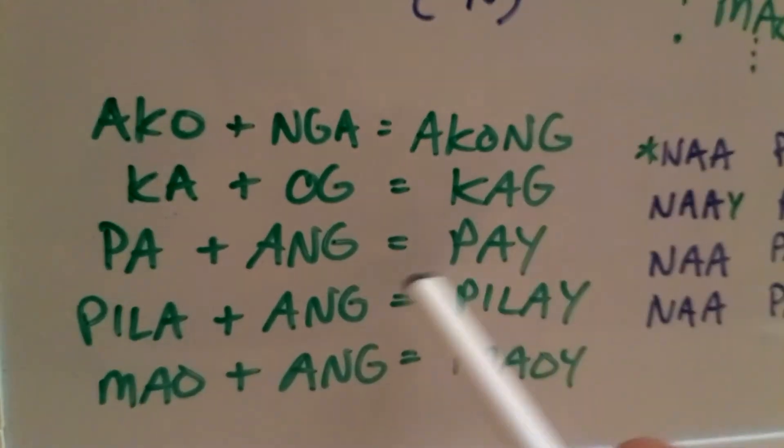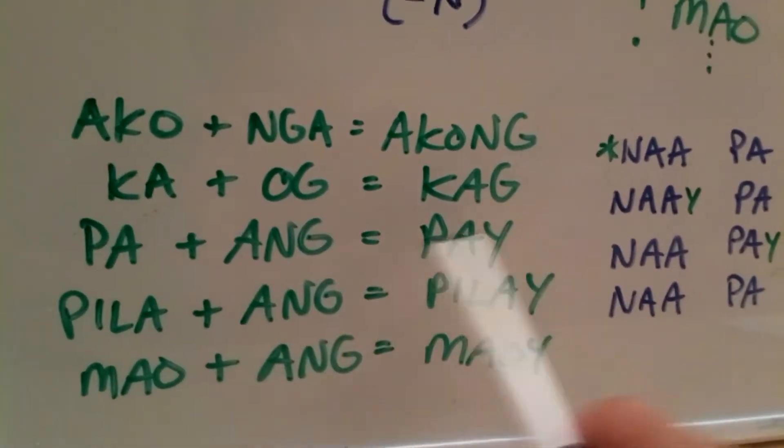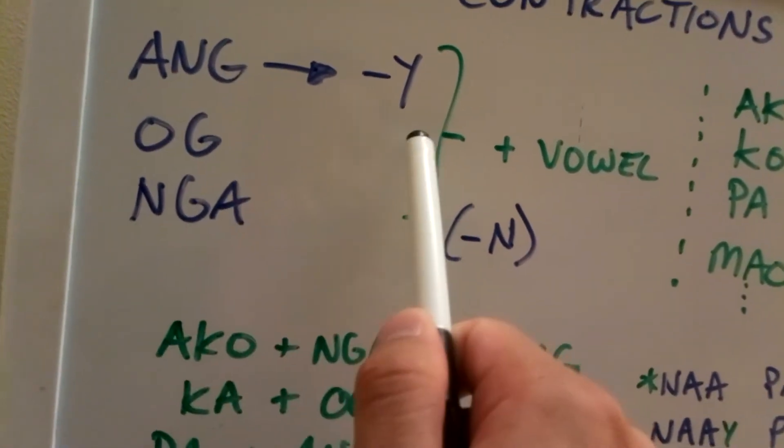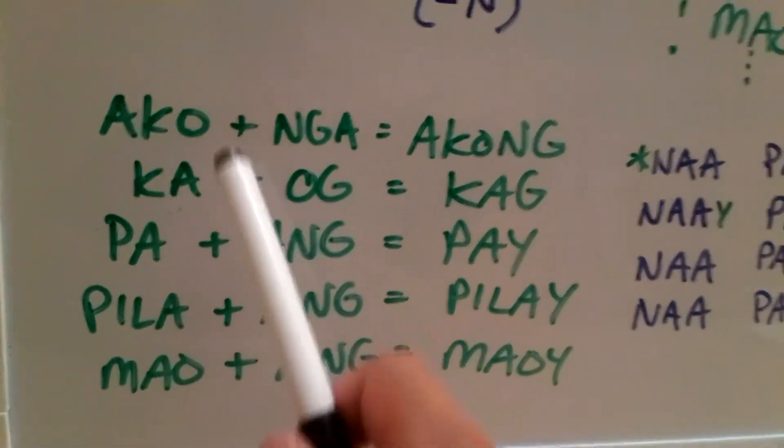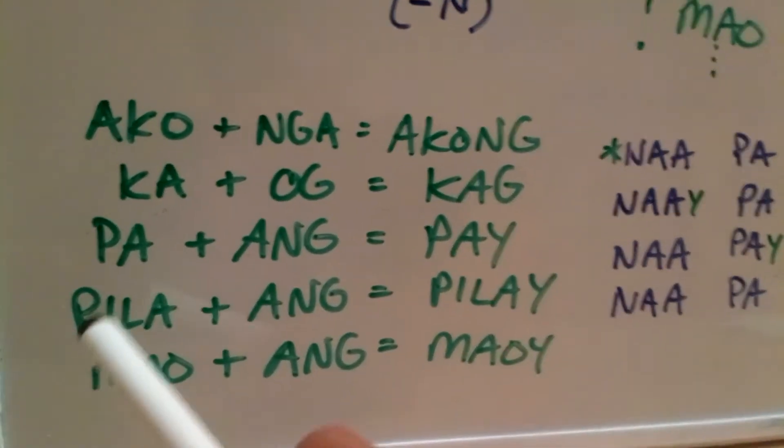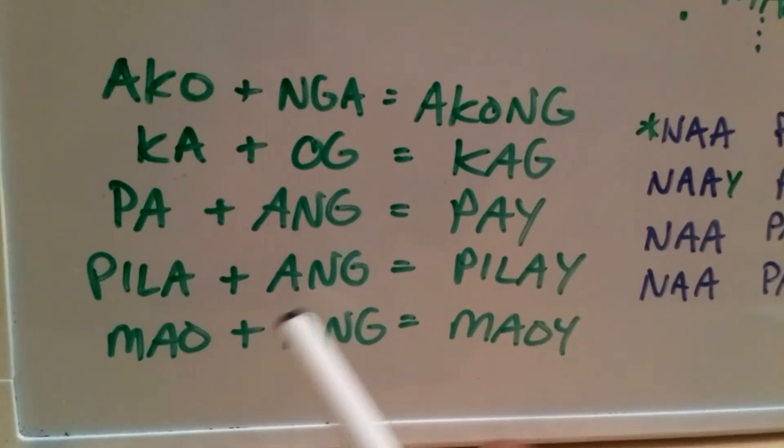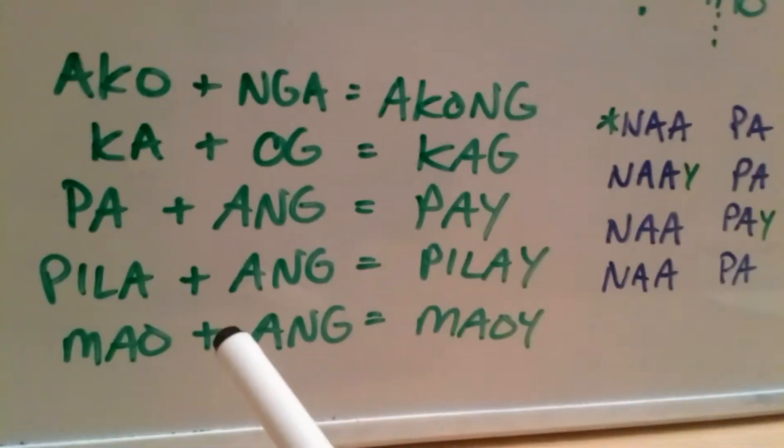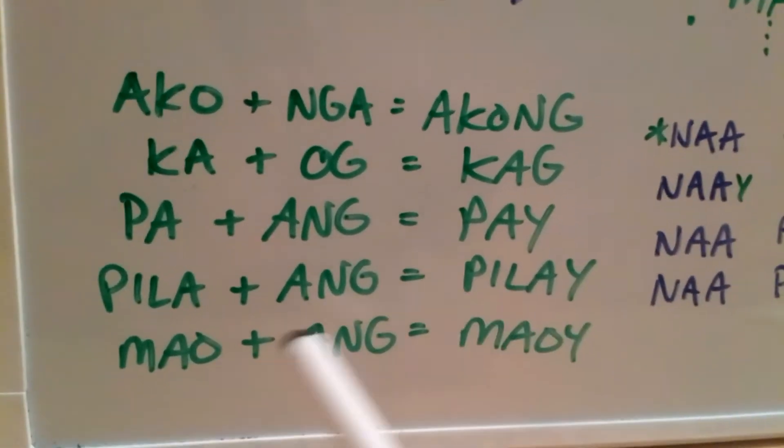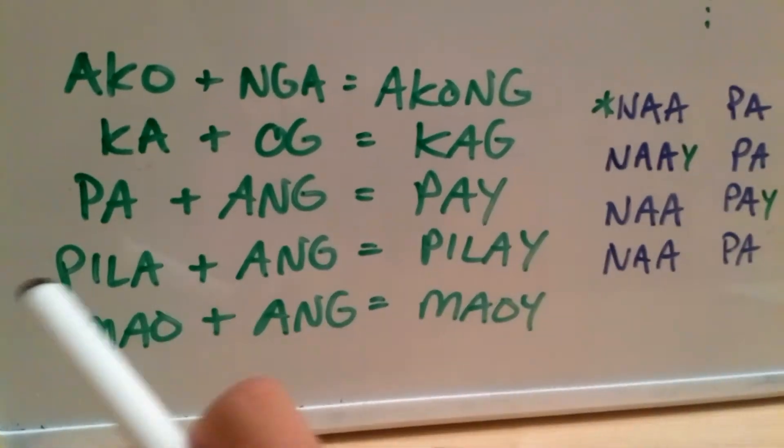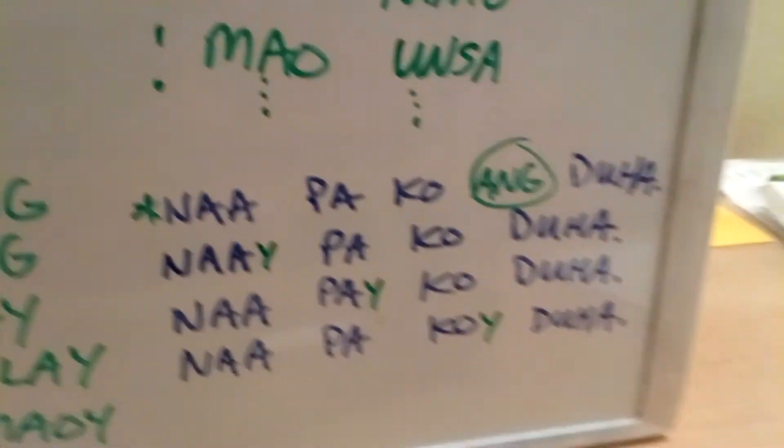Pa and og, you get pay. Pa and og gets pay. Now remember, we can't take og. We have to take e if you're going to contract it. Otherwise, it's not going to make sense.